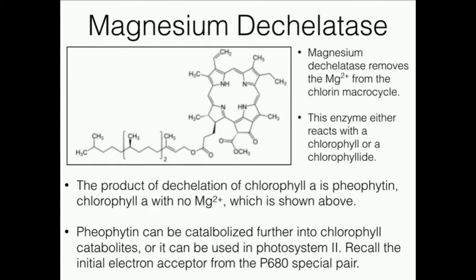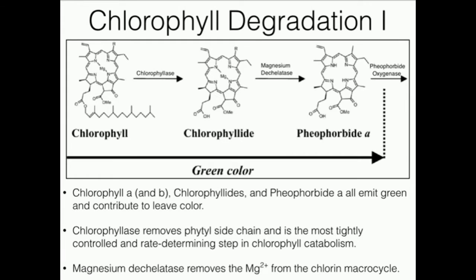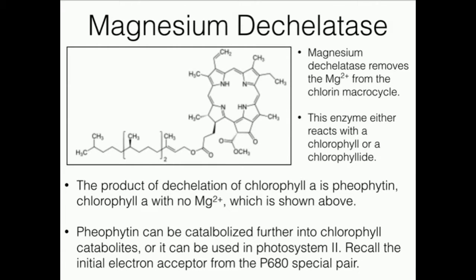These organisms are described like the Native American approach — Native Americans used every part of the bison: the meat, the fur, the bladder, everything. That's sort of the way these organisms are; they're going to use everything possible. They're not going to build pheophyton from scratch; they're going to use pre-existing chlorophyll, de-chelate it, and get pheophyton, which is the electron acceptor for P680.